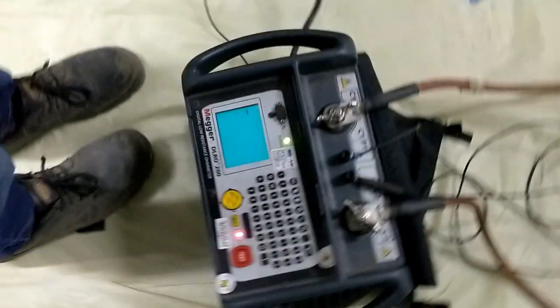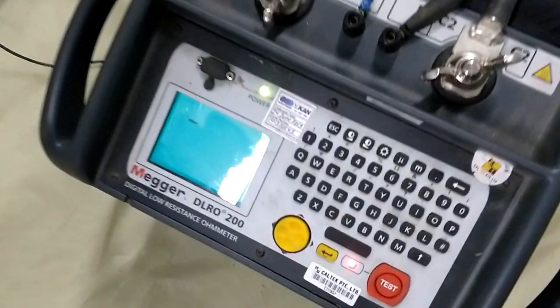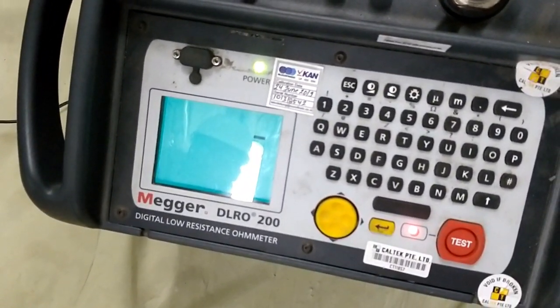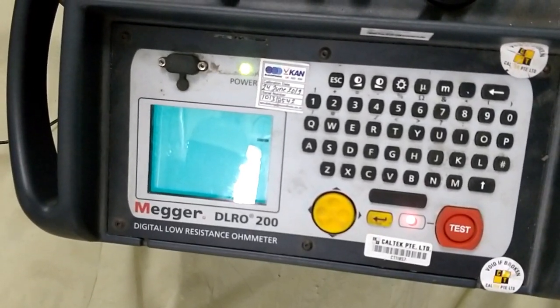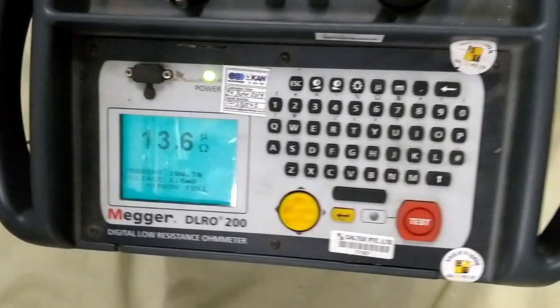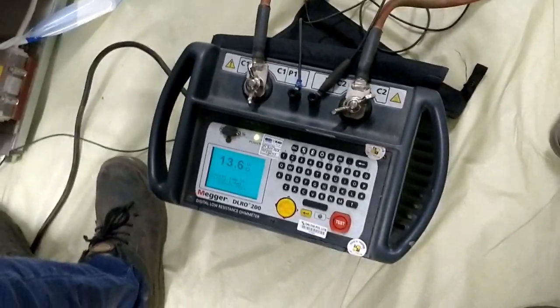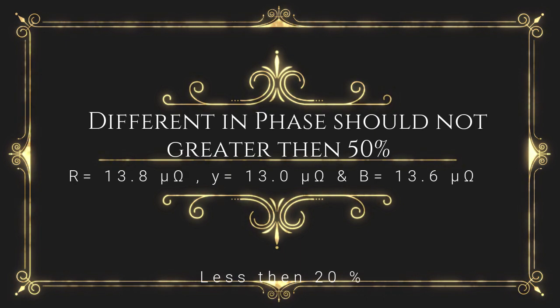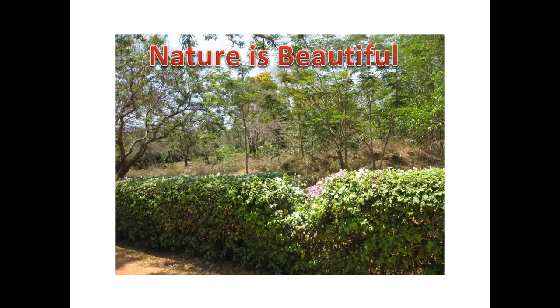Now we are doing testing for B phase. We got value 13.6 micro ohm. Now the difference between R phase, Y phase, and B phase is in the tolerance range. It is not much different, so the test is passed.